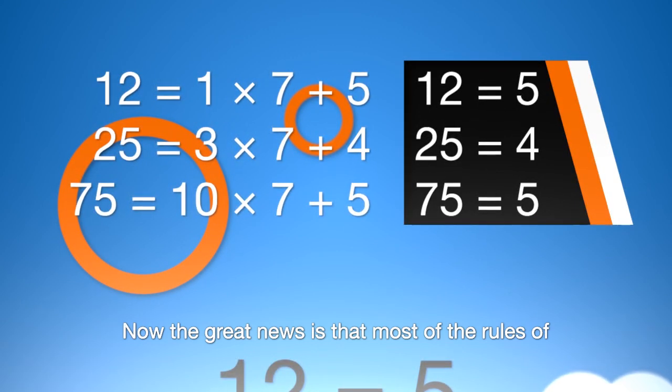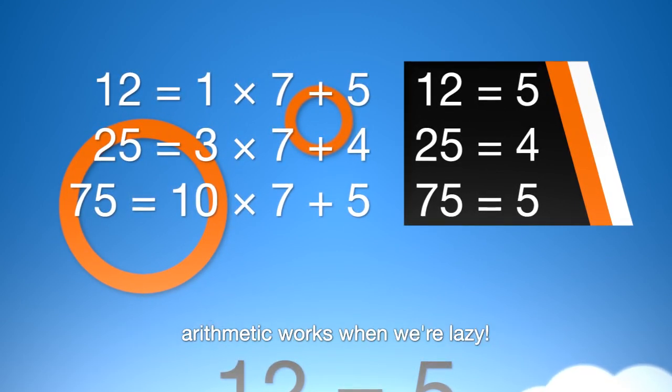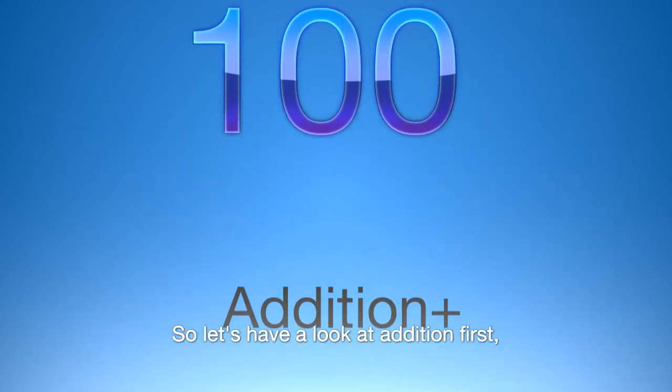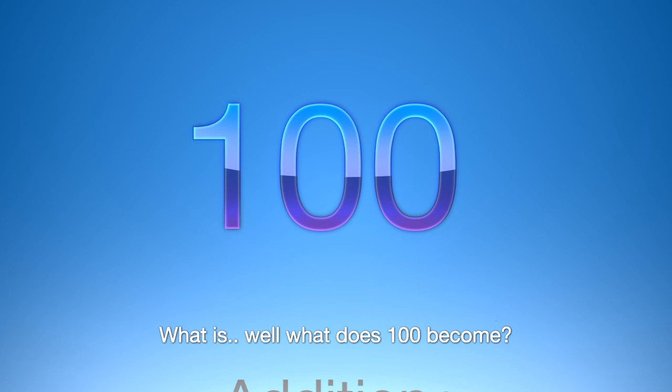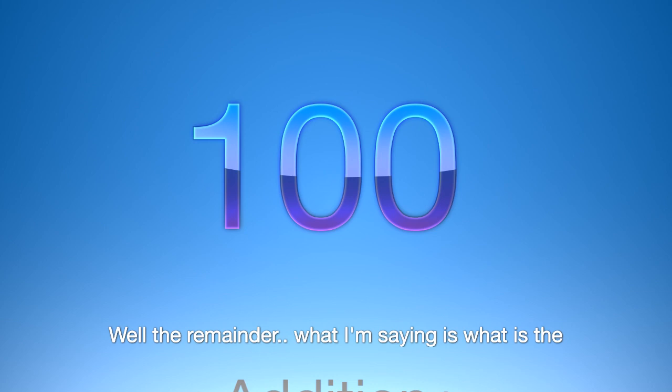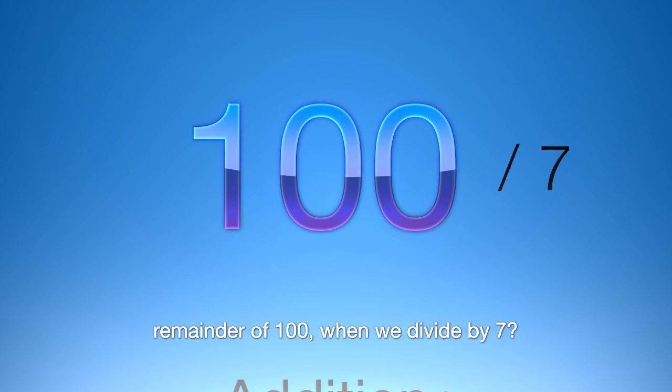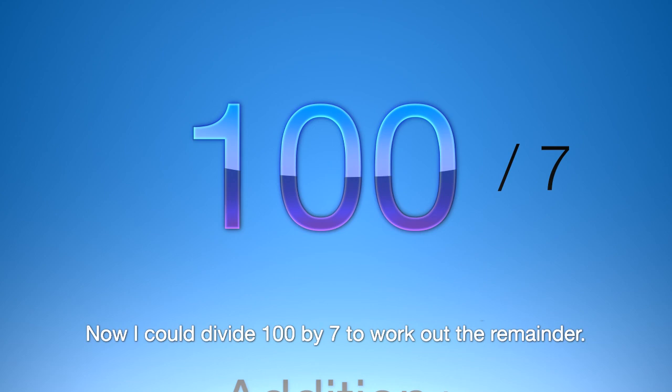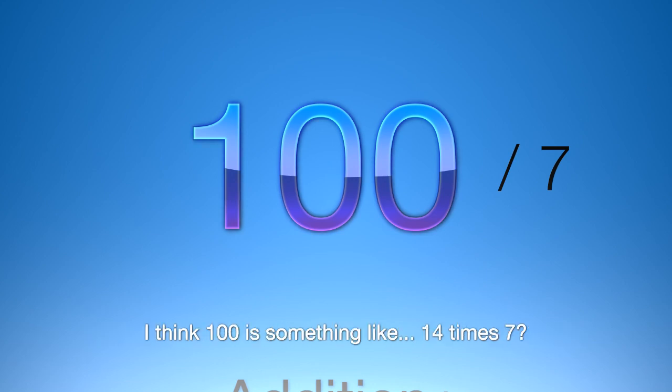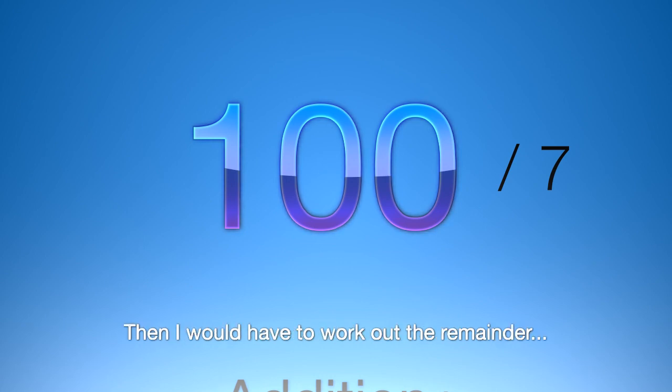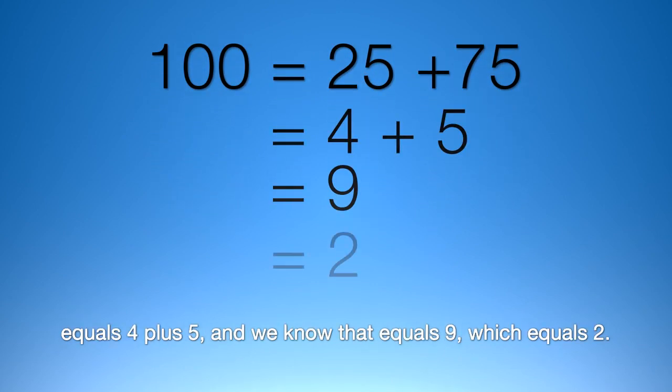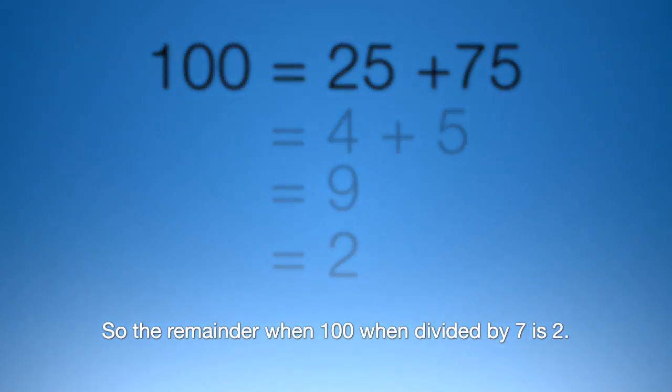Now the great news is that most of the rules of arithmetic work when we're lazy. So let's have a look at addition first. What does 100 become? Well, what I'm asking is what is the remainder of 100 when we divide by 7? Now I could divide 100 by 7 to work out the remainder. I think 100 is something like 14 times 7 and then I'd have to work out the remainder. Let's be lazy. 100 equals 25 plus 75. We know from before that that equals 4 plus 5. And we know that that equals 9 which equals 2. So the remainder when 100 is divided by 7 is 2.